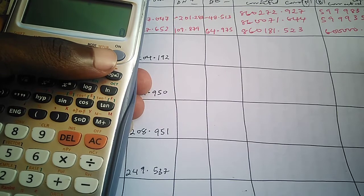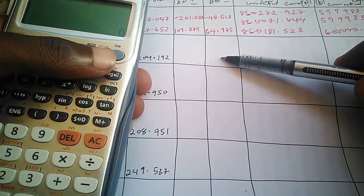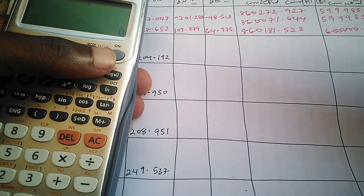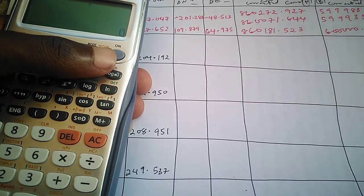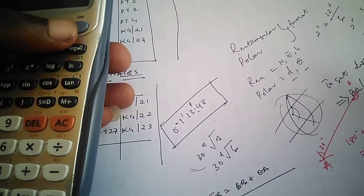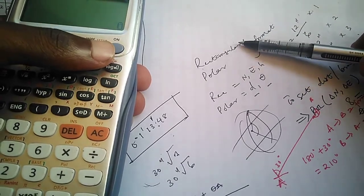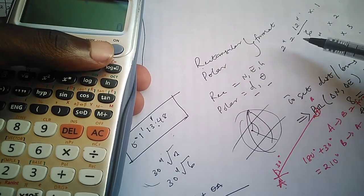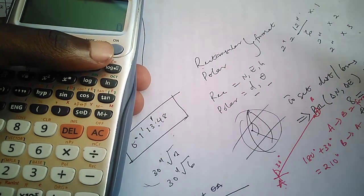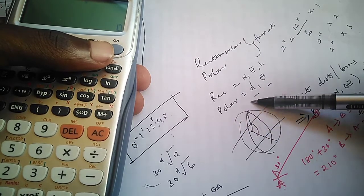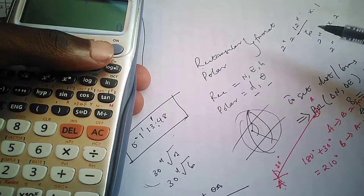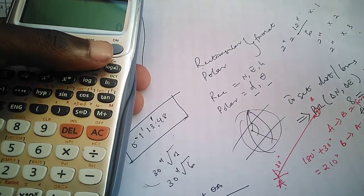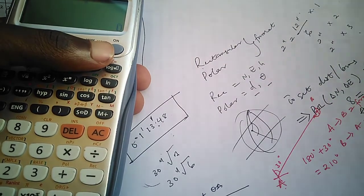We'll be looking at delta northing and delta easting. On one of our previous videos we computed for our distance and bearing from our POL computation. Coordinates can be represented in rectangular format or polar format. For our POL computation where we needed distance and bearing, it was represented in polar format. However, what we want now is delta northing and delta easting.